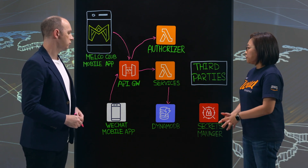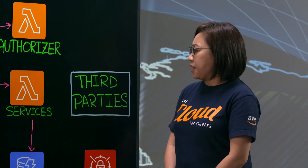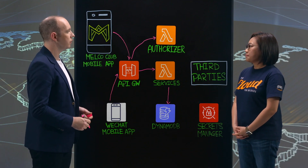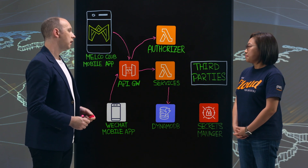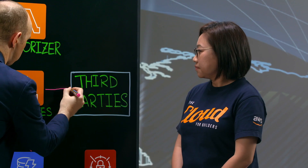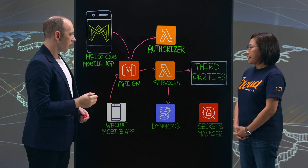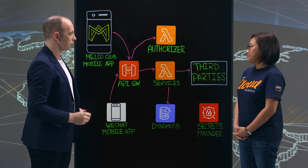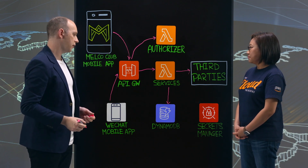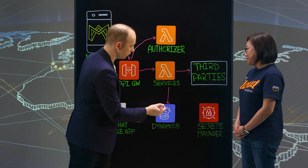There is also a need for the Malco Club application to integrate with third parties. How do you secure the API between the Lambda functions and third-party APIs? Most of our third parties have a SOAP or a REST API, so Lambda will call those APIs directly. In line with the request, Secrets Manager is called to obtain the credentials for the third party. We chose Secrets Manager because we can manage the whole lifecycle of our credentials.